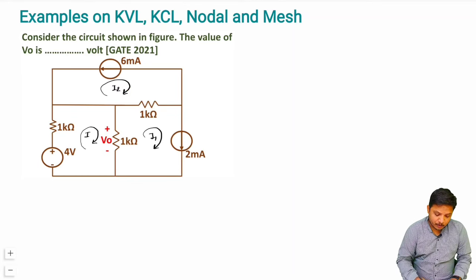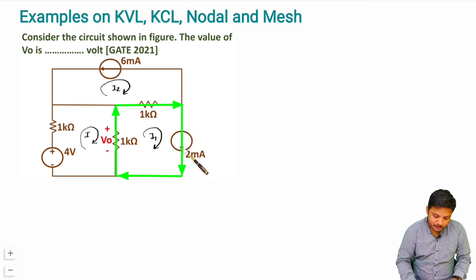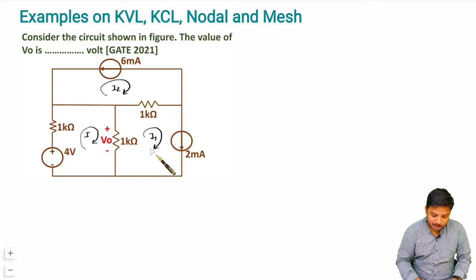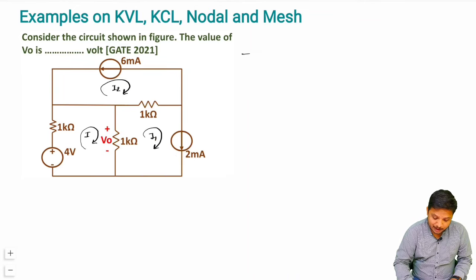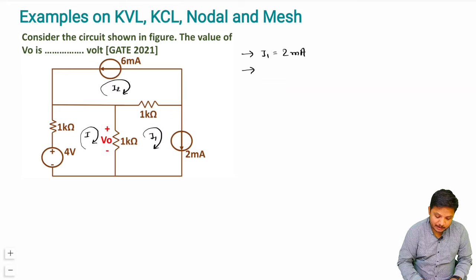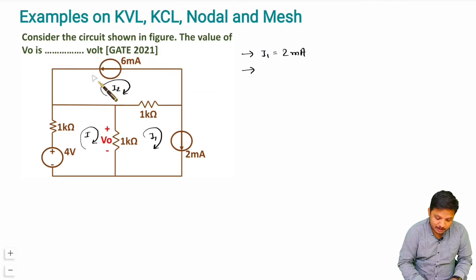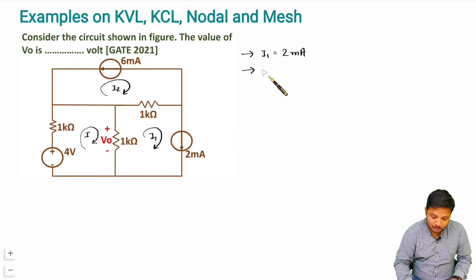Now observe carefully loop I1. This loop I1 has a current source of 2 milliampere, so we can directly say I1 equals 2 milliampere. And for loop I2, this loop has a current source of 6 milliampere flowing in the opposite direction to I2. So I2 equals minus 6 milliampere.